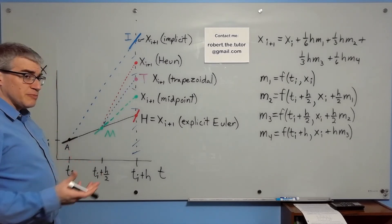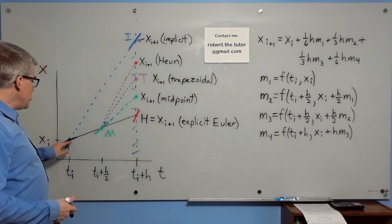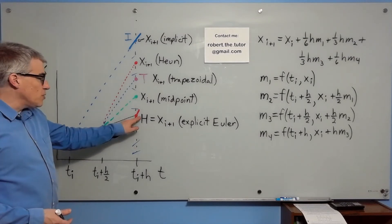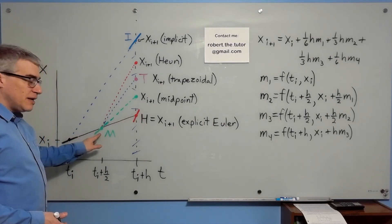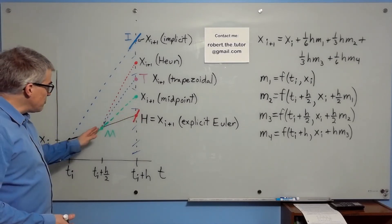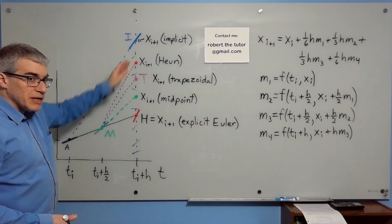And finally, Heun's method, we use the explicit method to find all the way at the end. We find out what the slope is there, back up halfway, and use that slope that I marked in red to get Heun's method estimate.